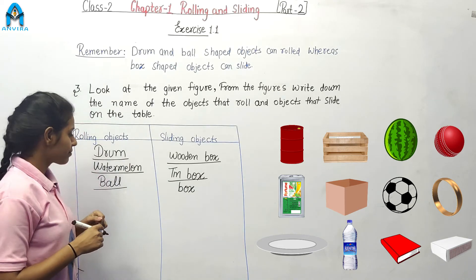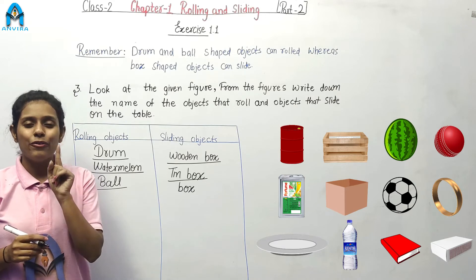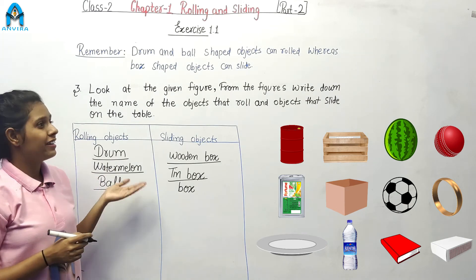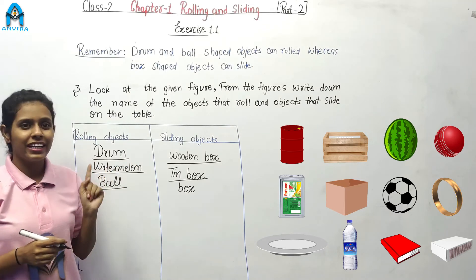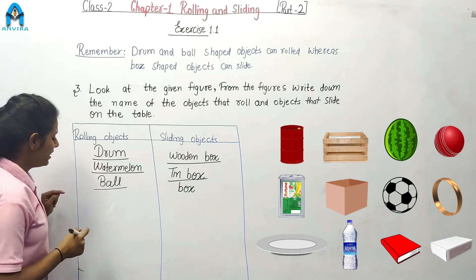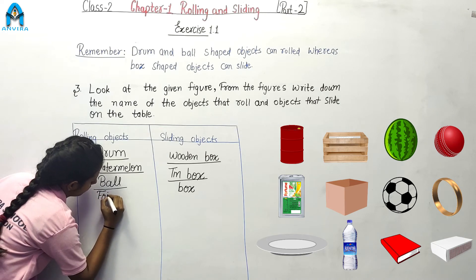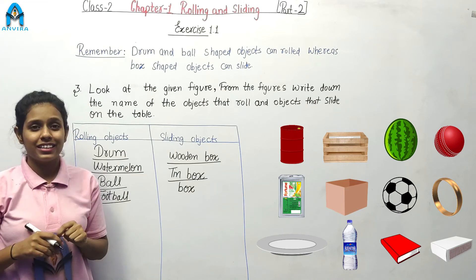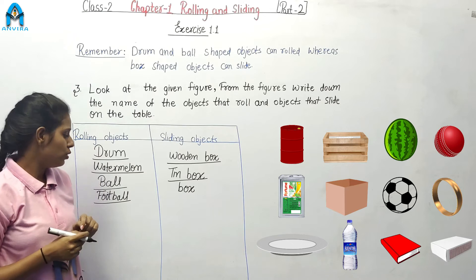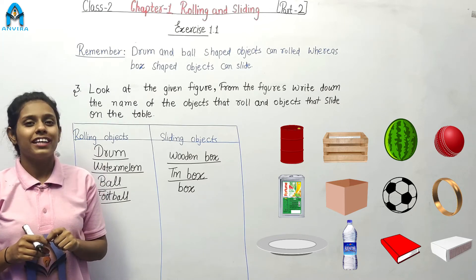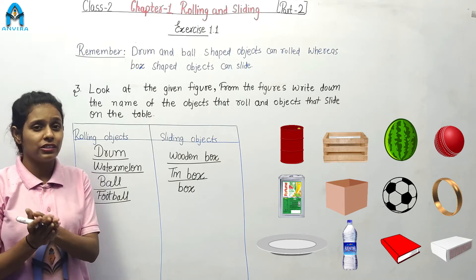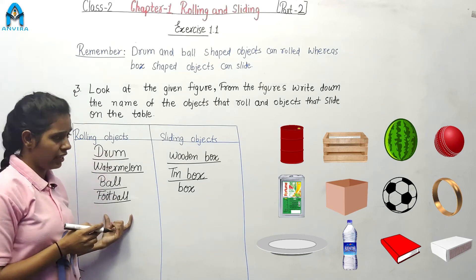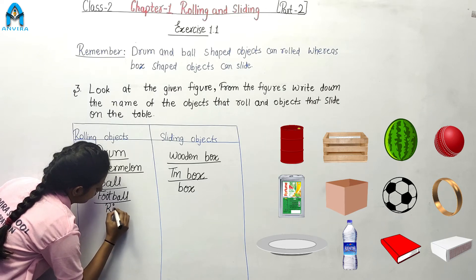Let's go to the next. This is a football. Can football roll or slide? The shape of football is like a ball, so football can roll. We write football on the rolling side. Next, this is a ring. The shape of ring is like a ball, so a ball shaped object can roll. We write ring on the rolling side.